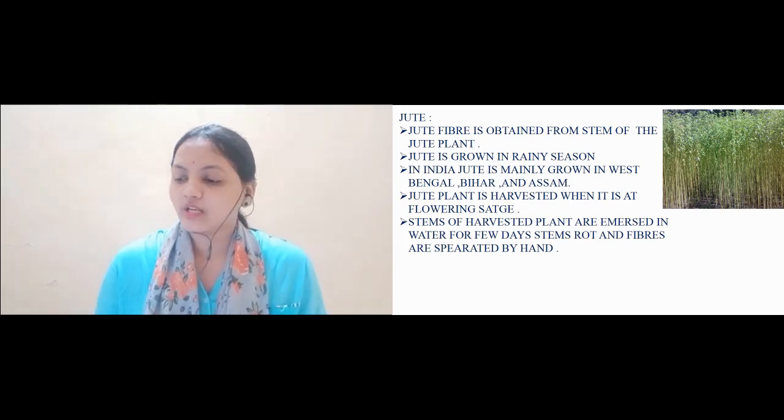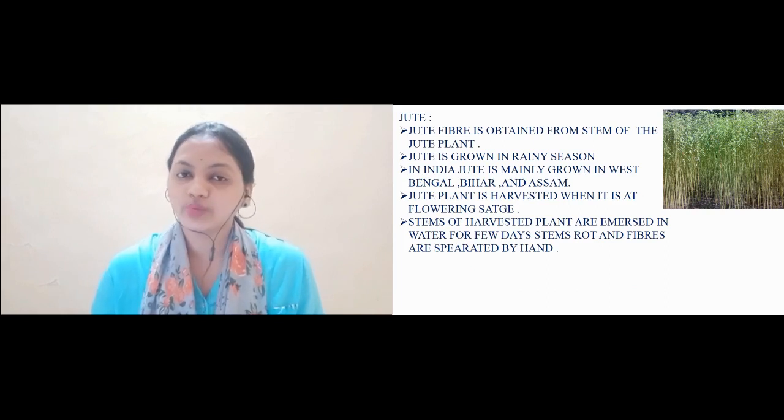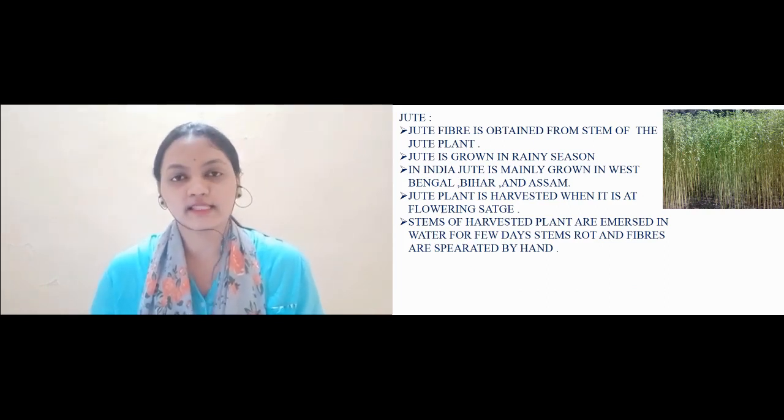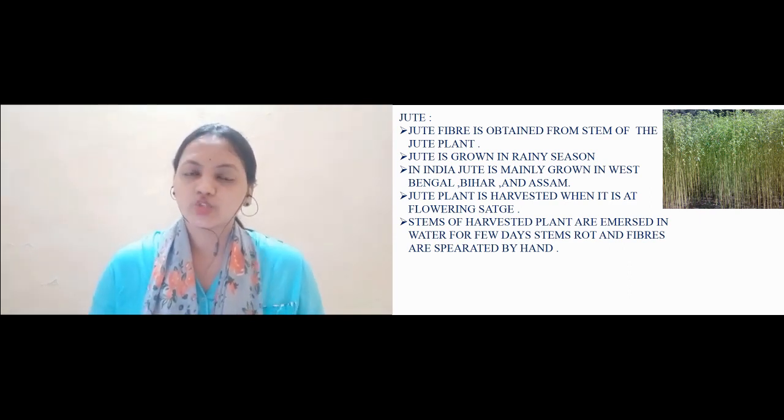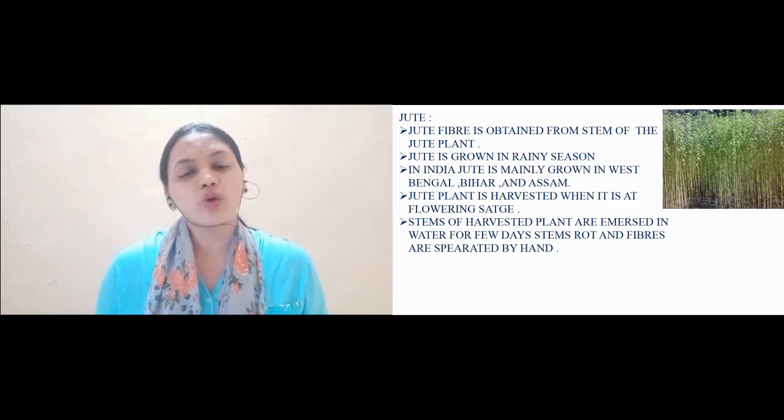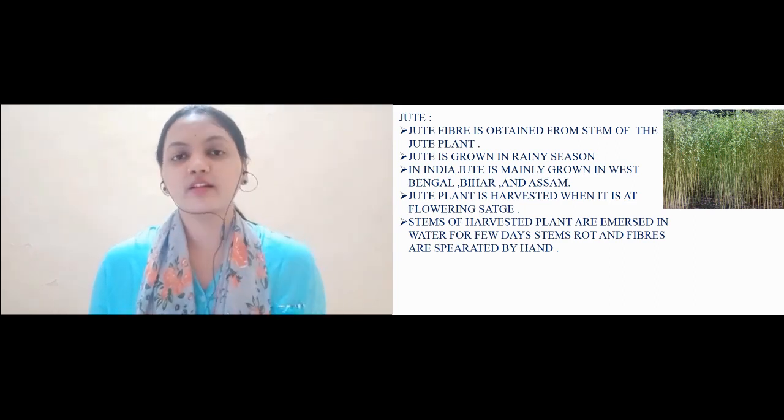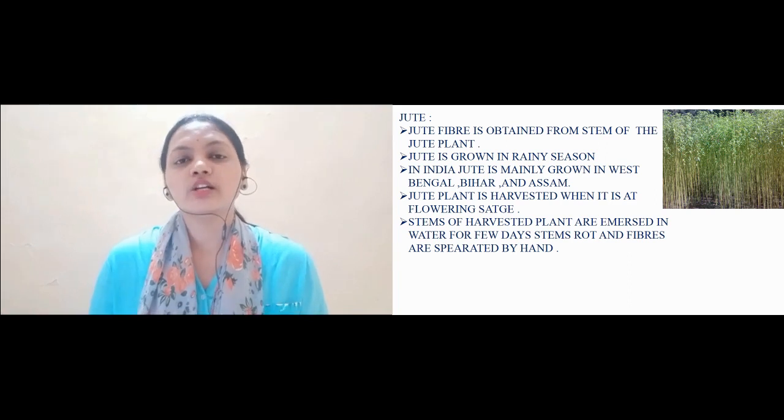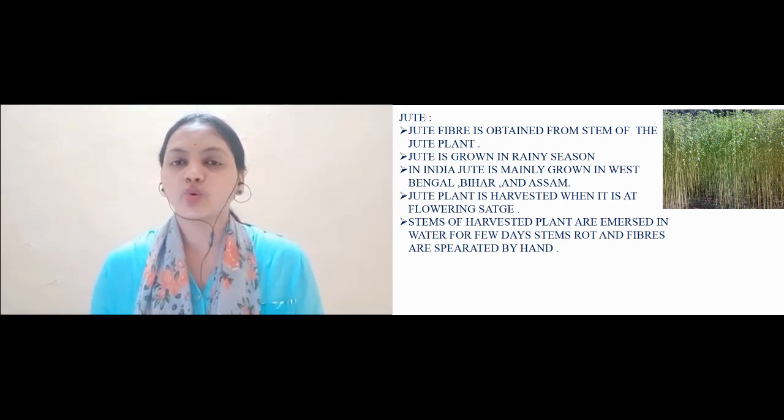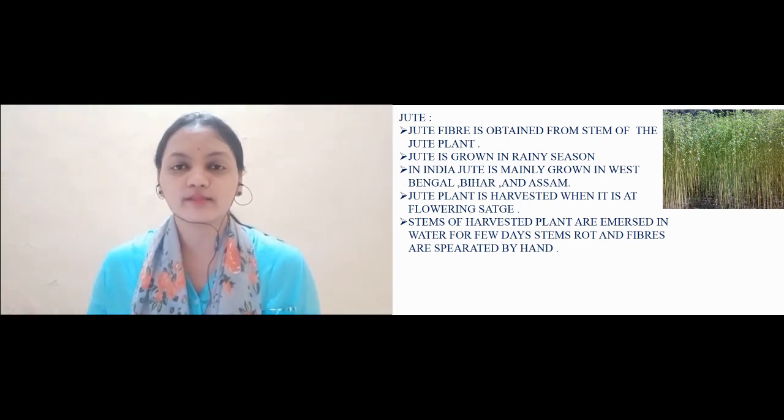The plant jute is grown during rainy season. This plant requires a lot of water for its growth, so it's grown in the rainy season. What part of jute do we use? We use the stem. When the tree comes to the harvesting stage, it is cut down and the stems are soaked in water for few days.